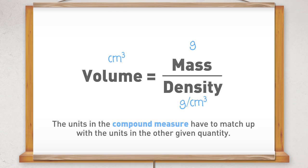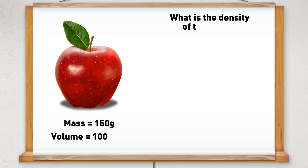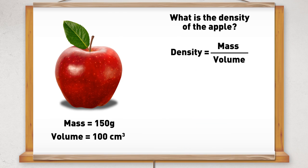Let's look at an example. An apple has a mass of 150 grams and a volume of 100 centimetres cubed, and we need to work out its density. Using the formula triangle, we cover up the D for density, so the calculation is mass divided by volume. Since the compound measure of density is being calculated, we don't need to check the units of the two given quantities, and we can put the numbers straight into the formula.